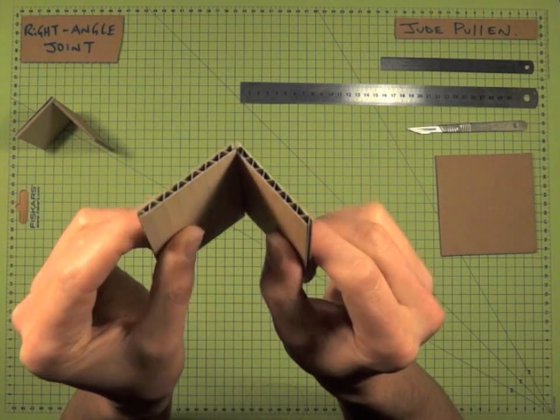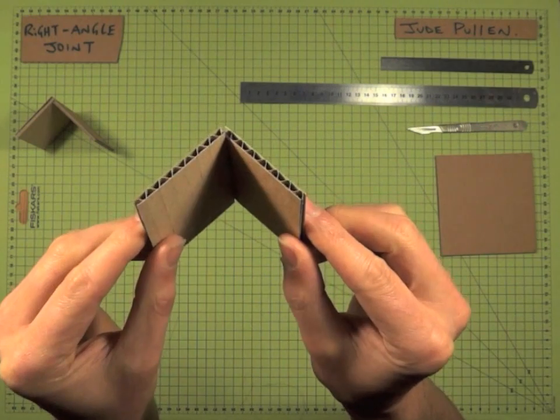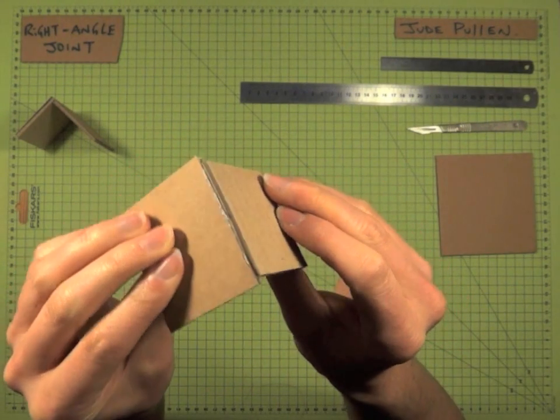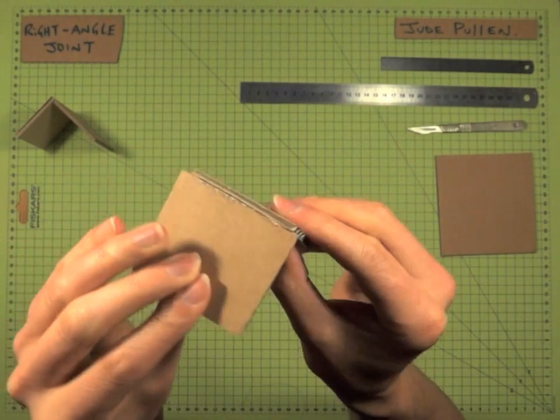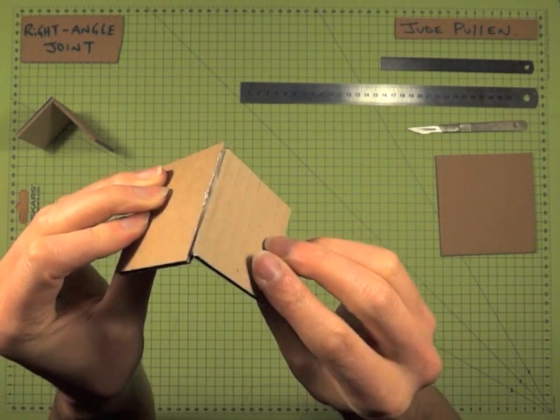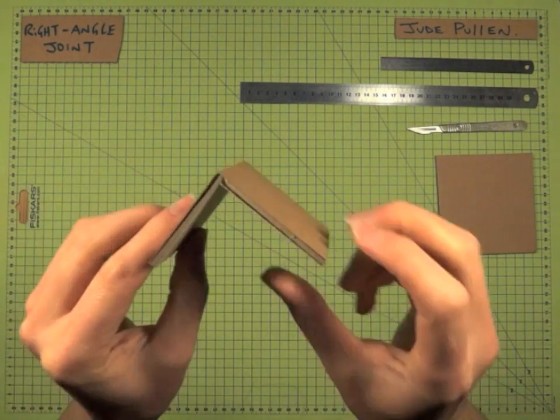Now the second one, we've managed to keep them in the same direction, so the grain is parallel. This time the problem being that the glue, when you press it together, sometimes spreads out. Now although this isn't the worst, you could just be neater, it's actually better still, structurally.